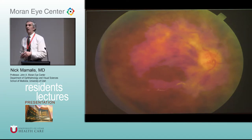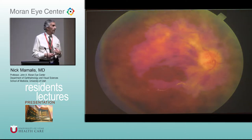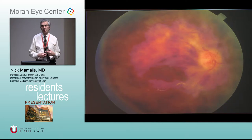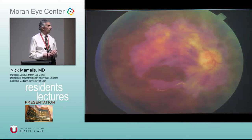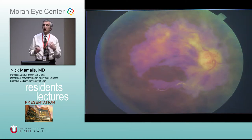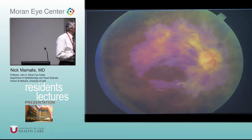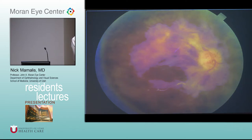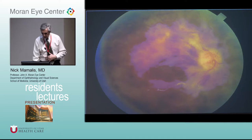This is a central retinal vein occlusion — they call this the blood-and-thunder appearance. I don't know exactly what that means but it means it's bad — a lot of blood. If you have a complete central retinal vein occlusion you get backup of blood all the way across, just diffuse backup of blood.